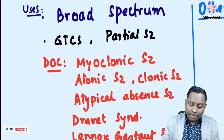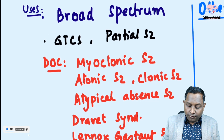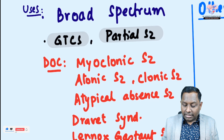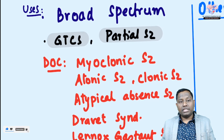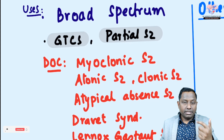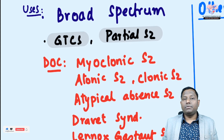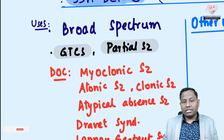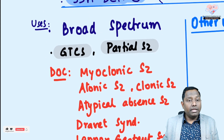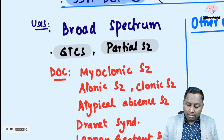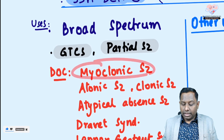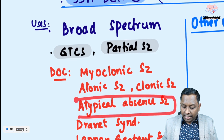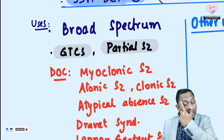Valproate's uses: it is a broad spectrum drug used not only in epilepsy. It can be utilized as a first-line drug in generalized tonic-clonic seizure (GTCS) and partial seizure. However, recent literature suggests lamotrigine should be preferred for GTCS as drug of choice due to less hepatotoxicity, since valproate is a highly hepatotoxic agent. It is also drug of choice in myoclonic seizure and atonic seizure.